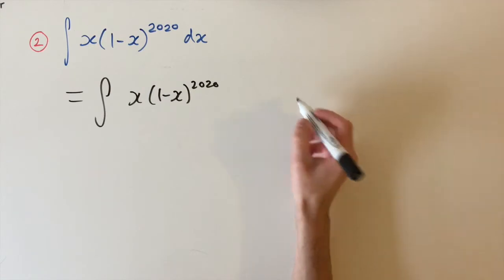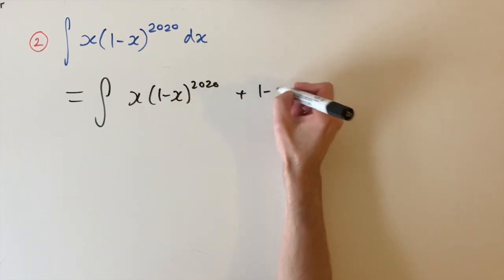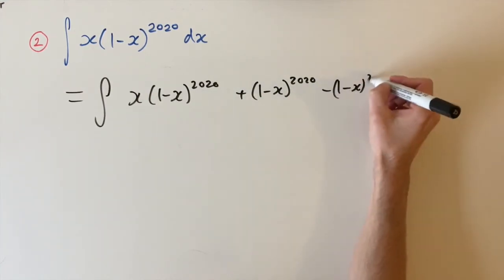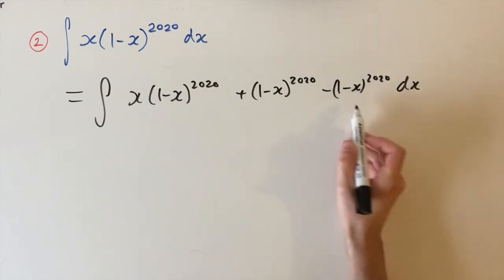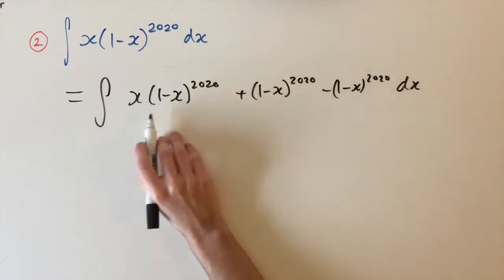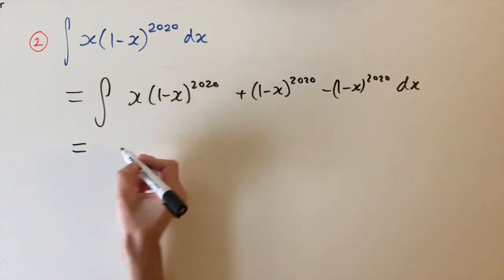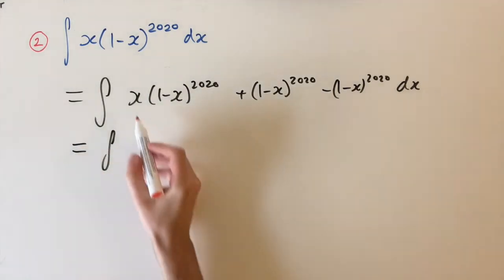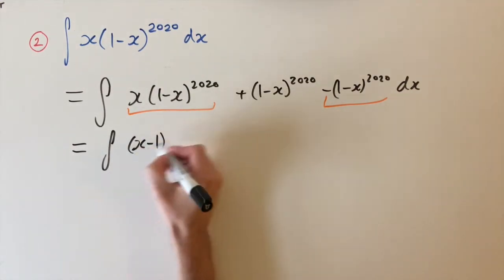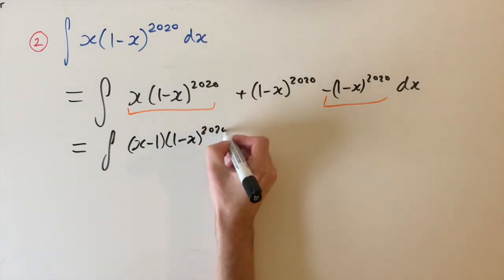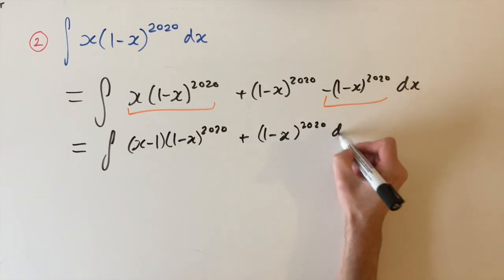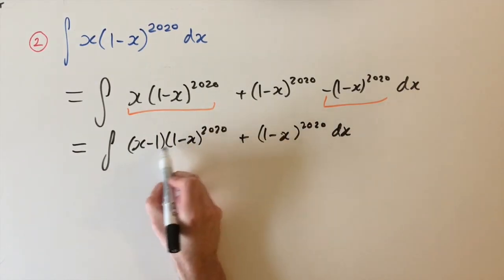We're going to add an imaginary zero — adding and subtracting the same factor, (1 minus x) to the power of 20, so we haven't changed anything. The reason for this is that we can then factor out one of these terms with the original one and get something we can integrate. Factoring the first and last terms gives us (x minus 1) times (1 minus x) to the power of 20, plus (1 minus x) to the power of 20. And (x minus 1) is the same as minus (1 minus x), up to a minus.